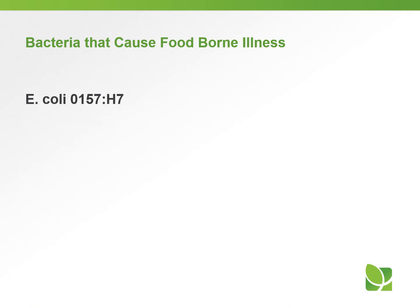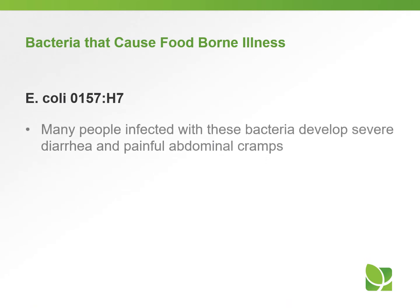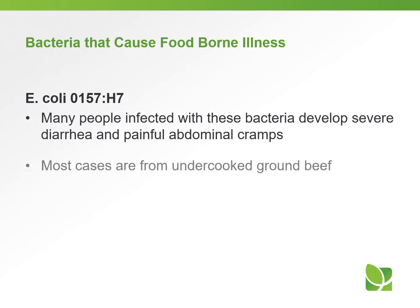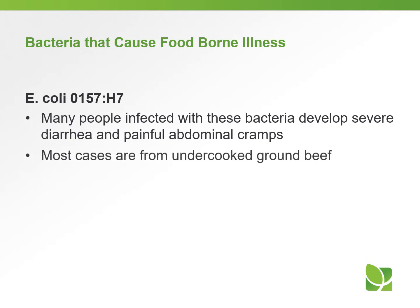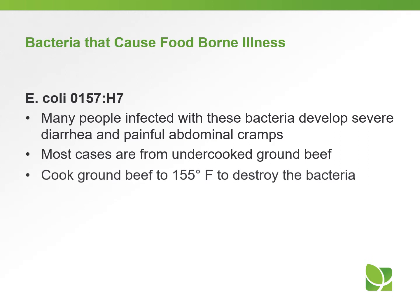E. coli's formal name is E. coli O157:H7. Many people infected with E. coli develop severe diarrhea and painful abdominal cramps. Most cases are from undercooked ground beef, so we want to make sure we cook our ground beef to 155 degrees to destroy the bacteria.